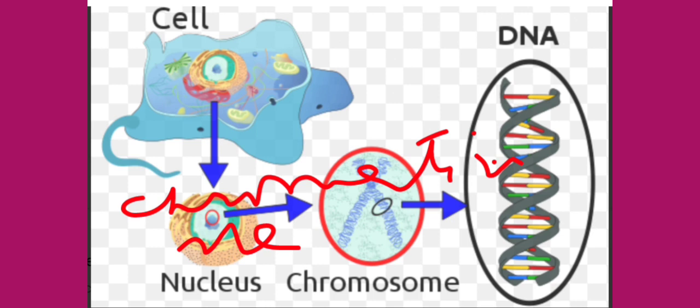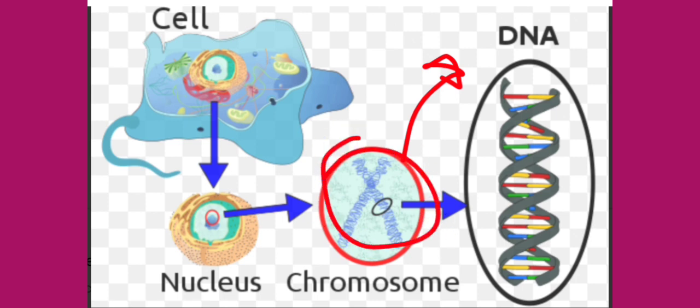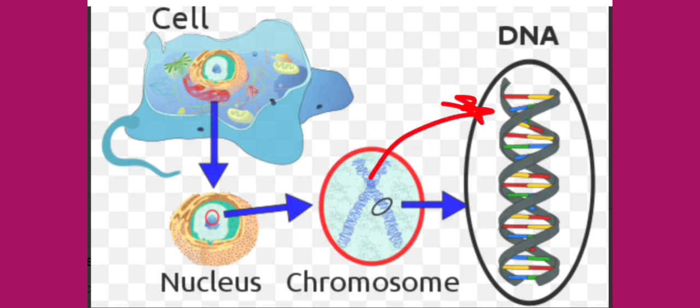The chromatin network condenses at the time of cell division and forms what are called chromosomes. Chromosomes are visible only at the time of cell division — they condense into small fragments. Chromosomes contain DNA, and genes are located on chromosomes. This genetic information is transferred via chromosomes.